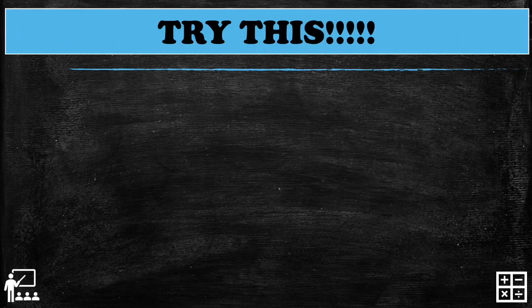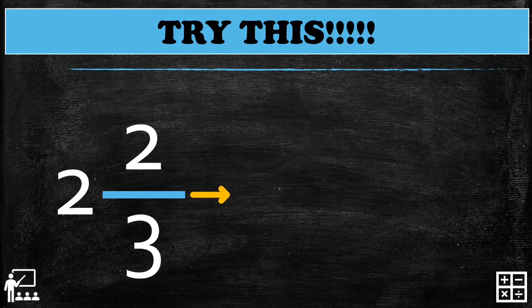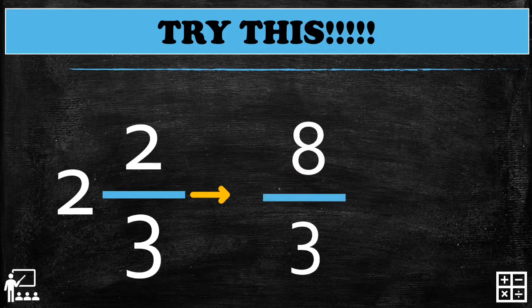Let's try this: I'll give you 2 and 2/3 as a mixed number. Identify what the improper fraction equivalent is. You have 15 seconds to answer. Time is up! My answer is 8 over 3. If we have the same answer, congratulations — you have learned something today!